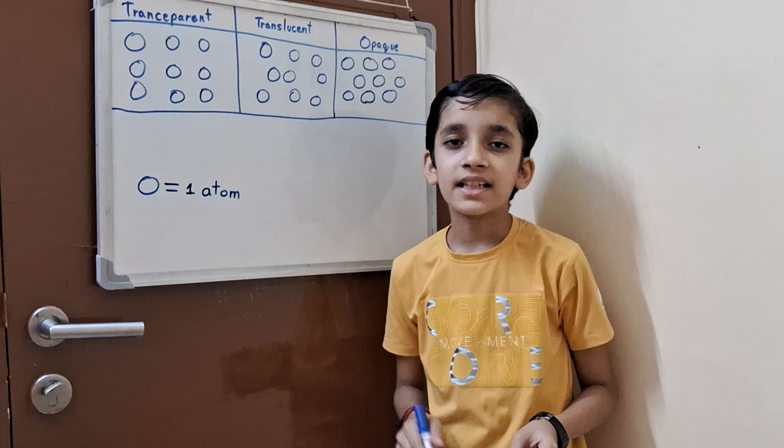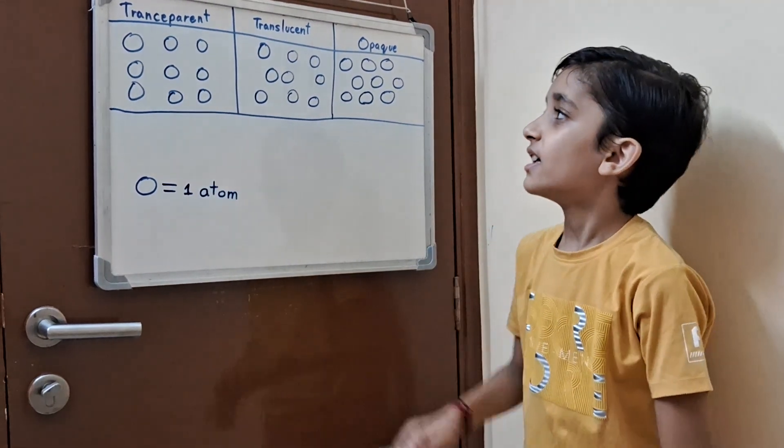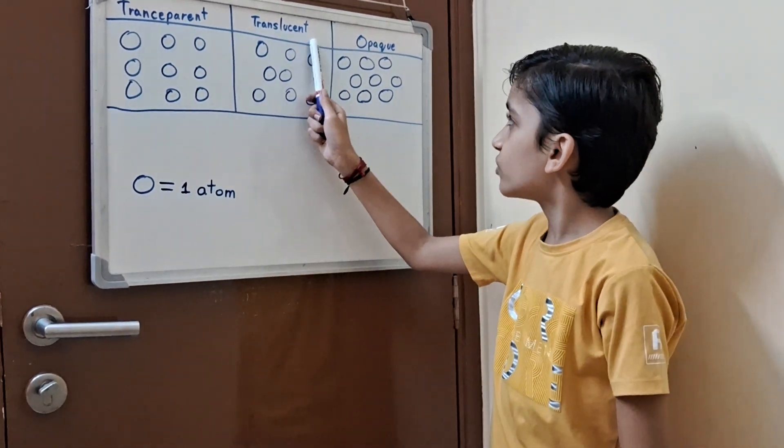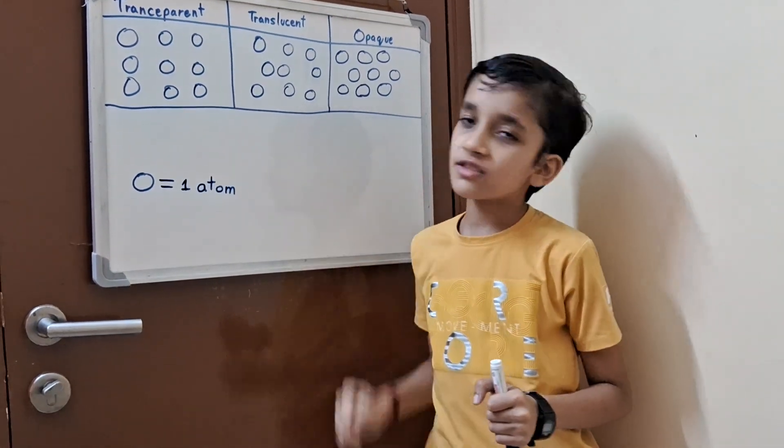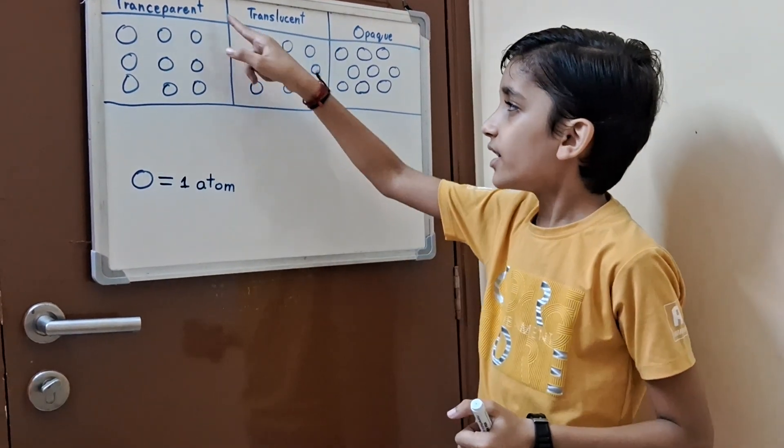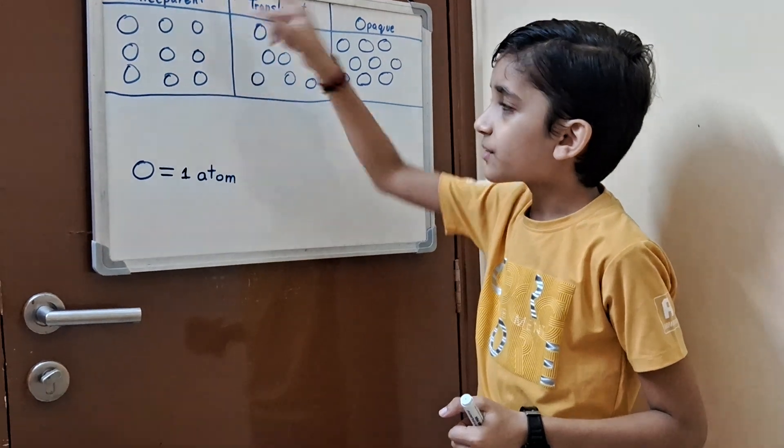It's mainly categorized in three different parts: transparent, translucent, and opaque. So what type is transparent?